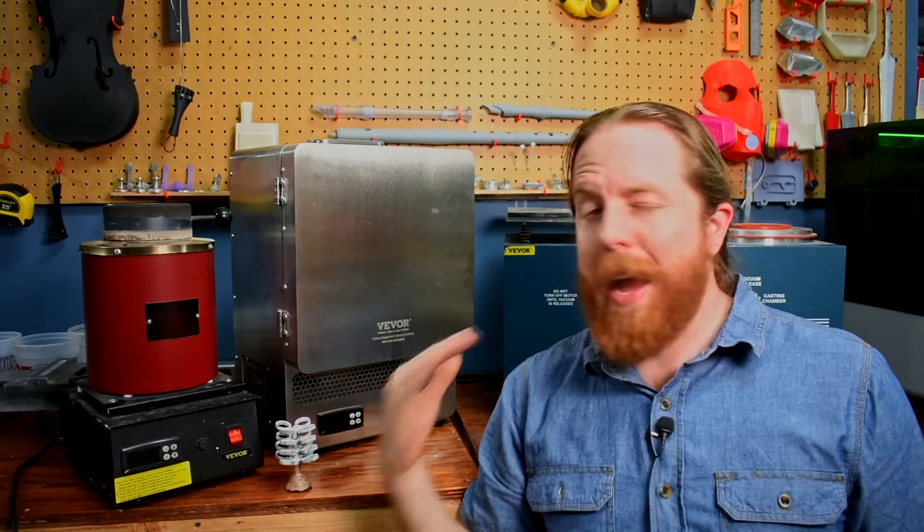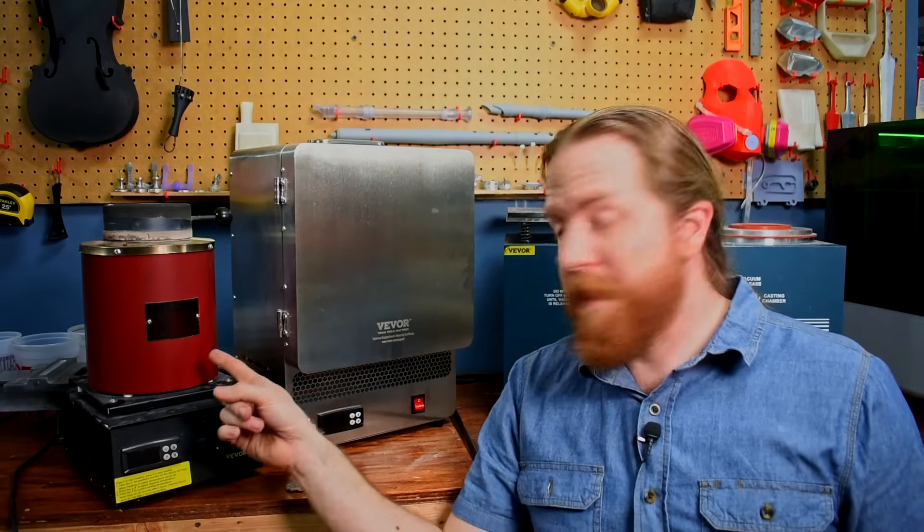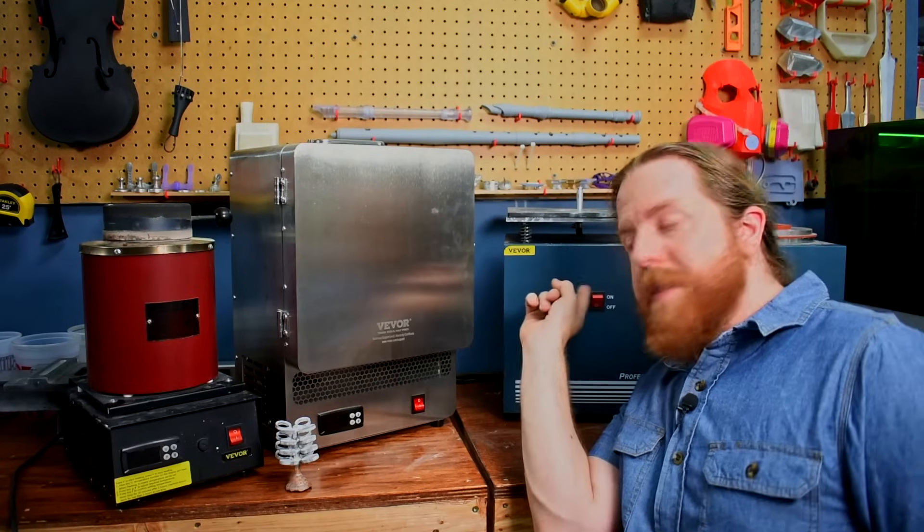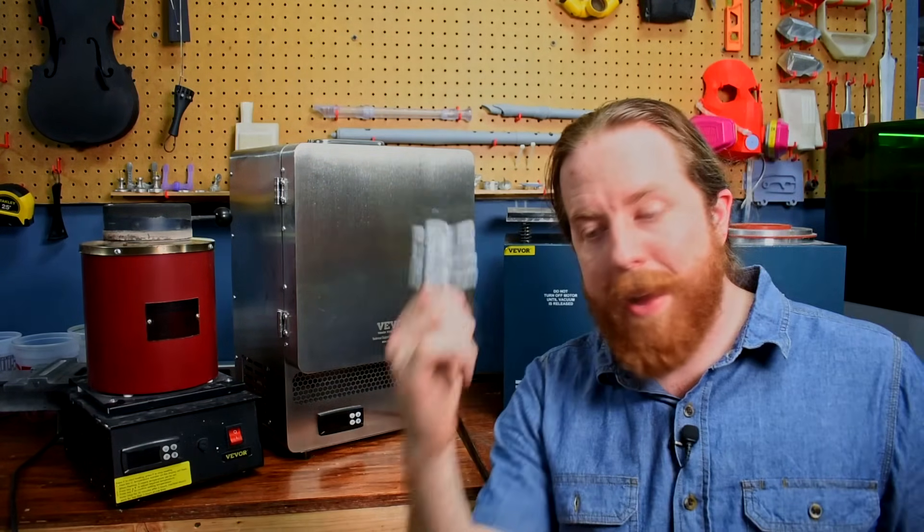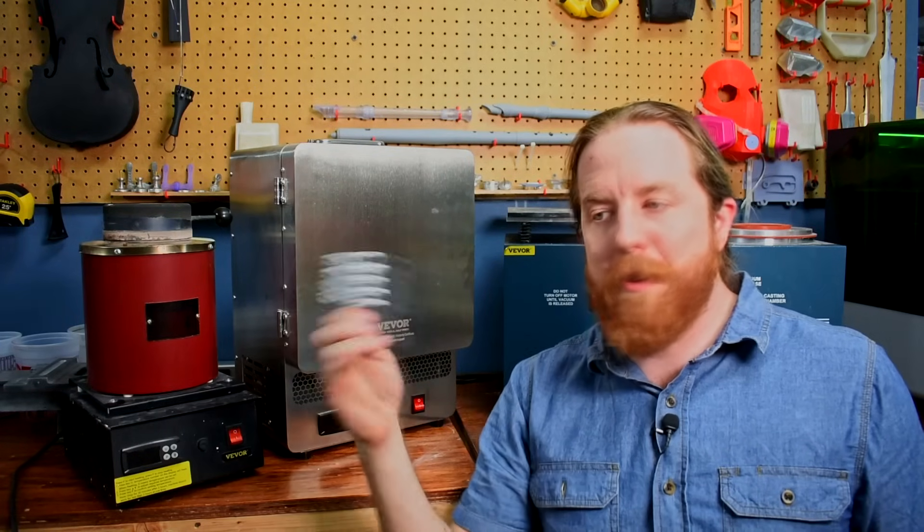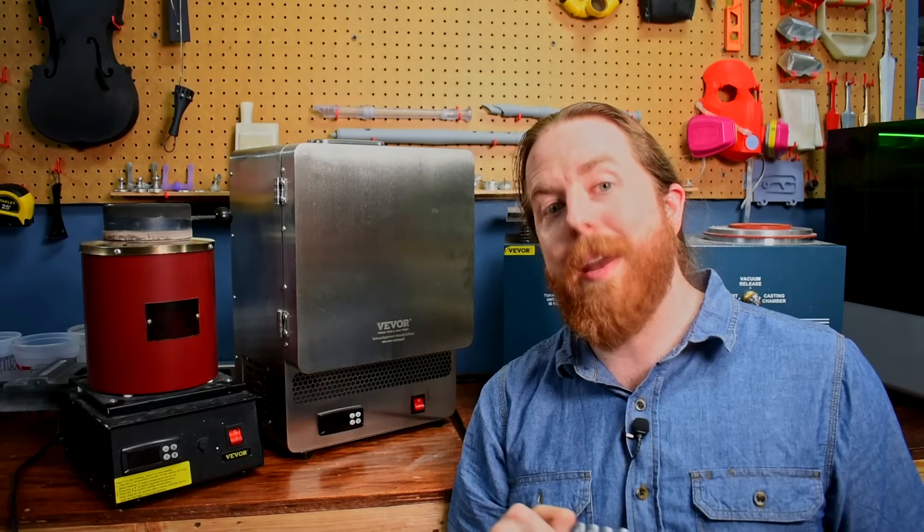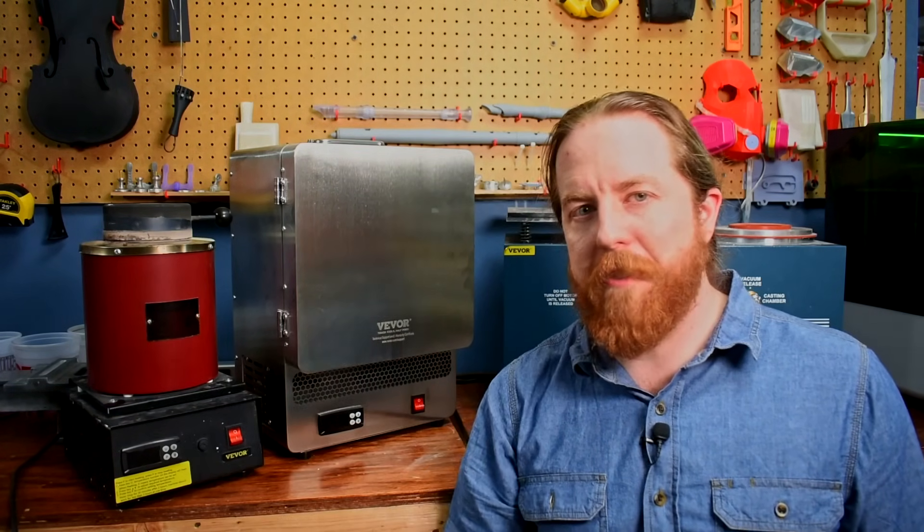I wouldn't trust anything even cheaper though. But I will tell you, this furnace works. This burnout kiln works. This vacuum casting machine works. And you can do bronze with it. And if you can do ancient bronze, you can do silver and gold too, because that's not as high a temperature. I don't have any silver and gold, because I'm not made of money. But bronze, it works just fine.